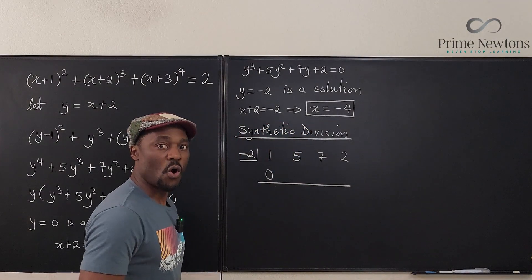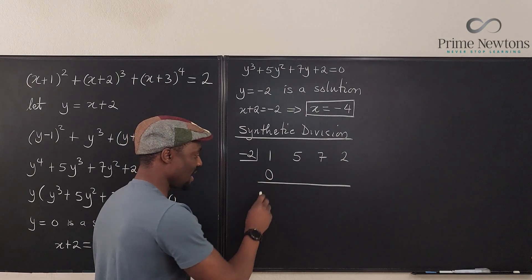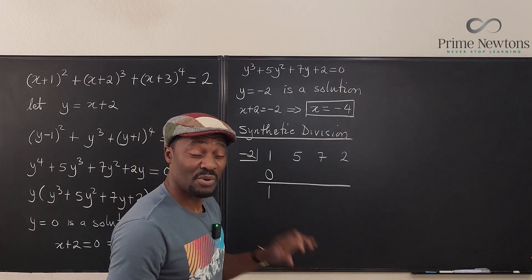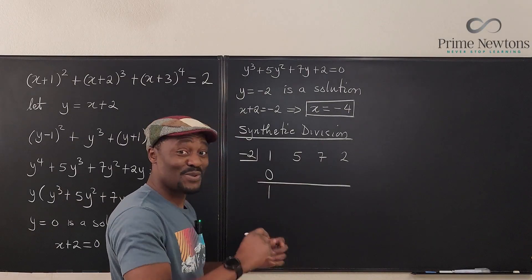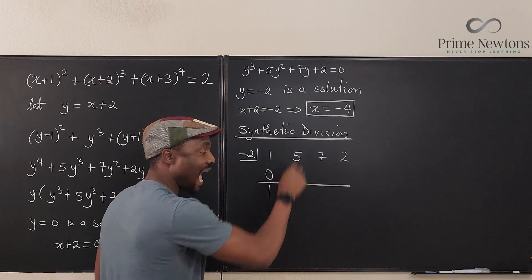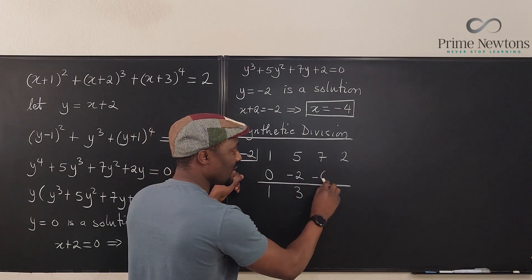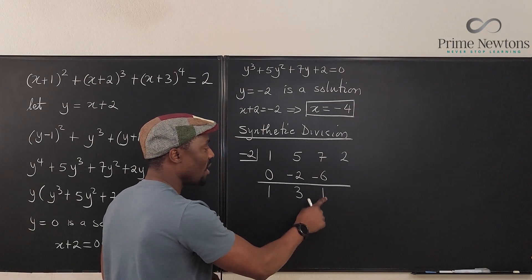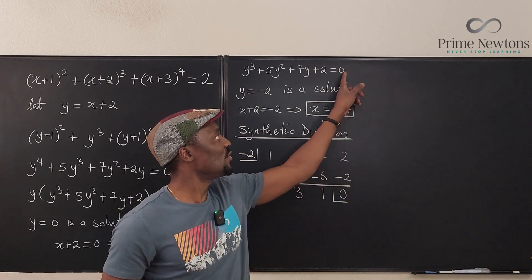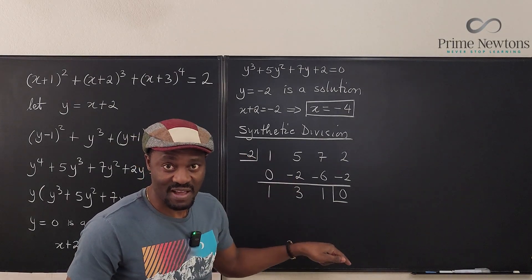Carry down the 1. Multiply: 1 × (−2) = −2. Add to 5 to get 3. Multiply: 3 × (−2) = −6. Add to 7 to get 1. Multiply: 1 × (−2) = −2. Add to 2 to get 0. We get a remainder of zero, confirming that −2 is indeed a root.